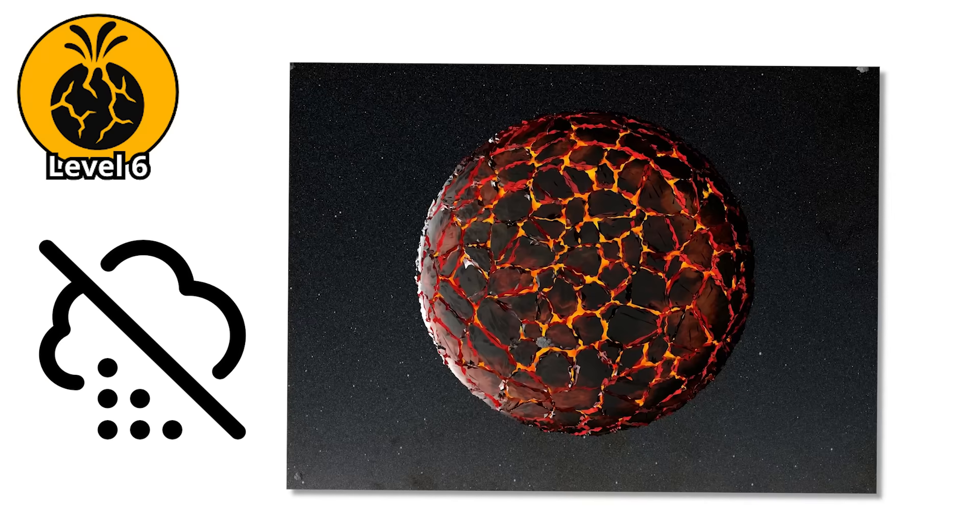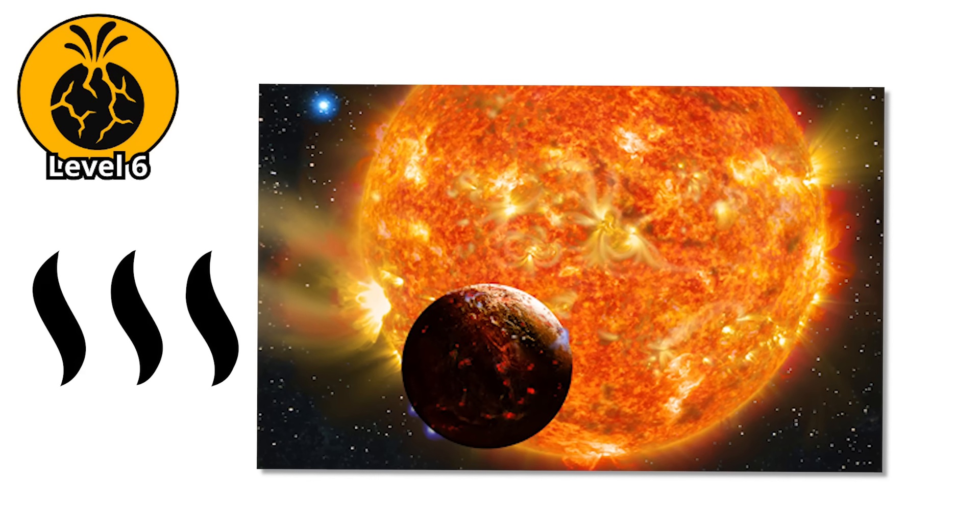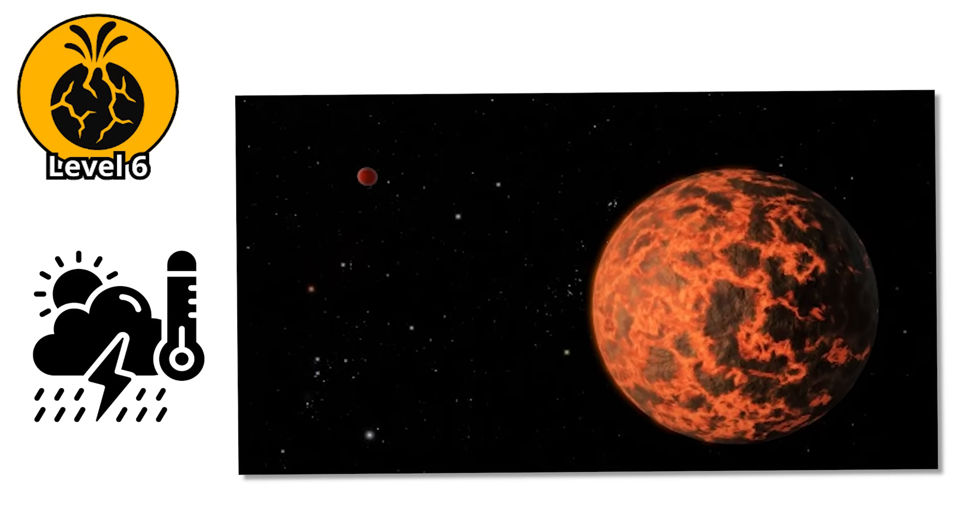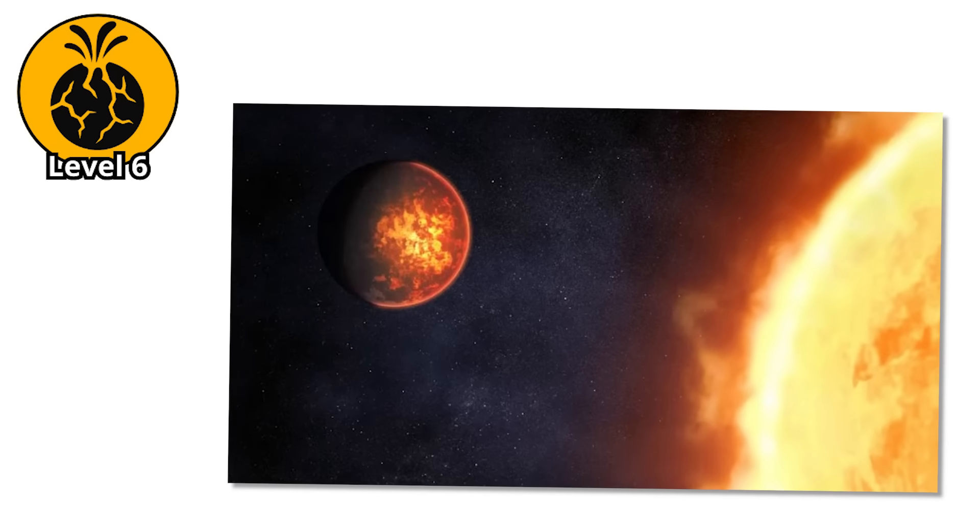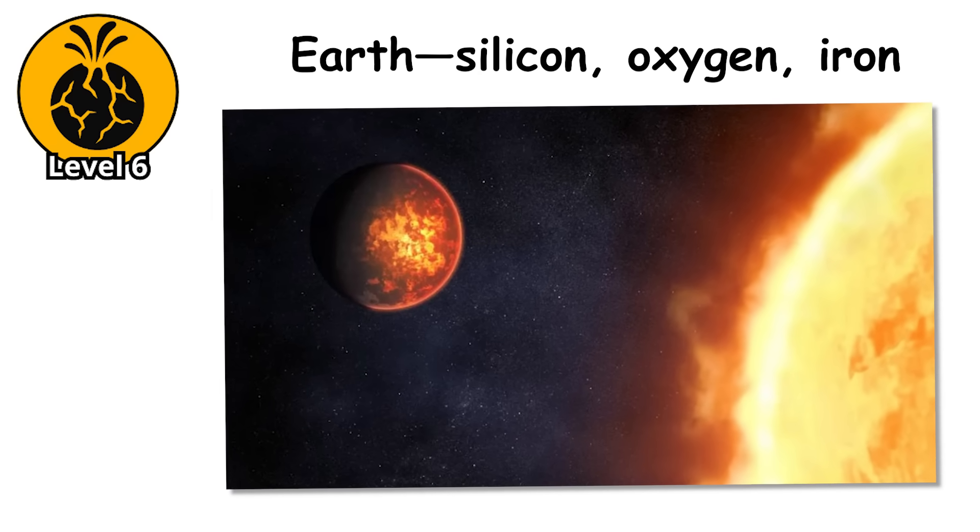On these worlds it doesn't rain water, it rains rocks. Vaporized minerals in the atmosphere condense and fall as pebbles of corundum, the same material that makes rubies and sapphires. The weather forecast is partly cloudy with a chance of gemstones, extreme heat warning in effect indefinitely. Lava worlds are made of the same basic ingredients as Earth - silicon, oxygen, iron. But what if a planet formed from an entirely different recipe? What if instead of rock, a world was built from pure carbon?